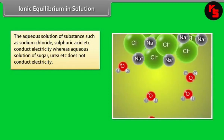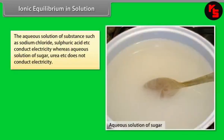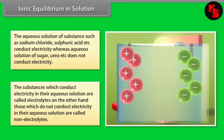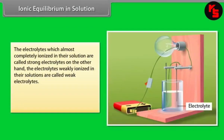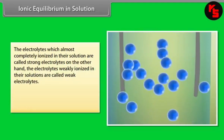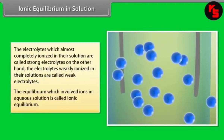Ionic Equilibrium in Solution. Aqueous solutions of substances like sodium chloride and sulfuric acid conduct electricity, while aqueous solutions of sugar, urea, etc. do not. Substances that conduct electricity in their aqueous solution are called electrolytes; those that do not are called non-electrolytes. Electrolytes almost completely ionized in their solution are called strong electrolytes, while those weakly ionized are called weak electrolytes. The equilibrium involving ions in aqueous solution is called ionic equilibrium.